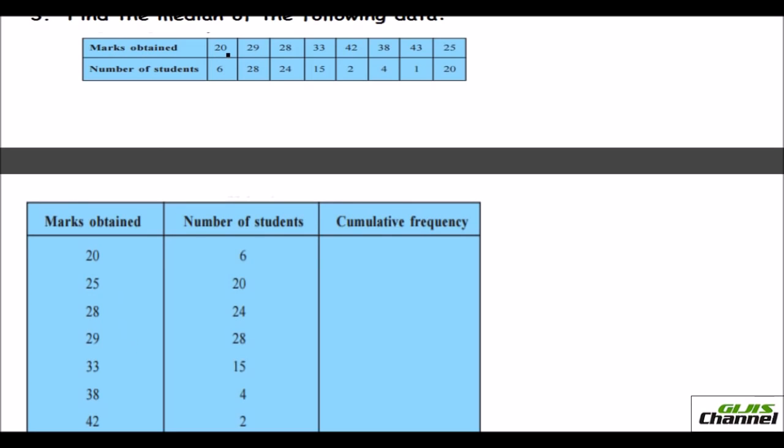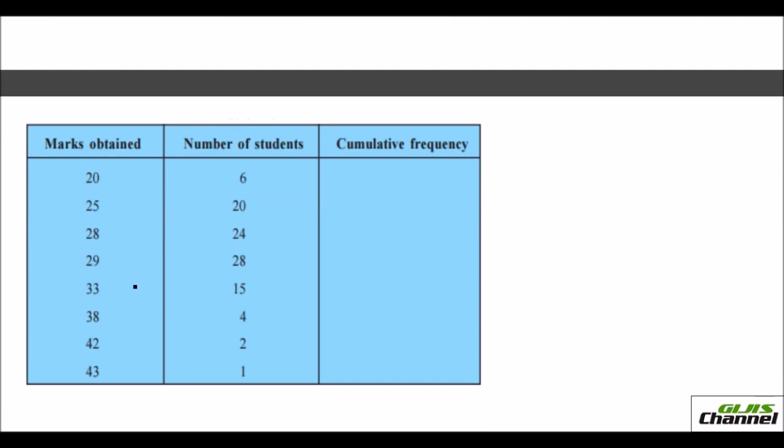So I have written first 20, and the frequency, the corresponding frequency I have written here. Then after 20, it is 25, and the corresponding frequency here. Likewise, I have already arranged it. Now what you need to do is, this is your x value, and this is your frequency value. Now what you do is, you find the cumulative frequency. Cumulative frequency is nothing but summing up the frequency at each step.